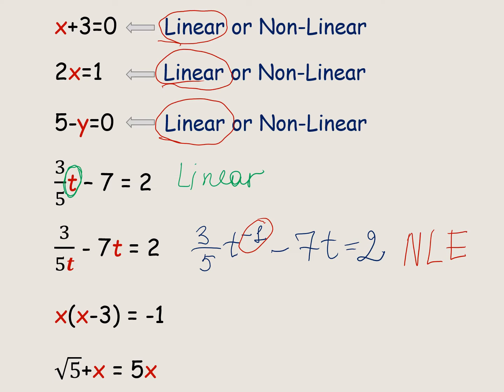For x times (x minus 3) equals negative 1, we can distribute x to get x squared minus 3x equals negative 1. The highest value of the exponent equals 2, so it is a nonlinear equation.